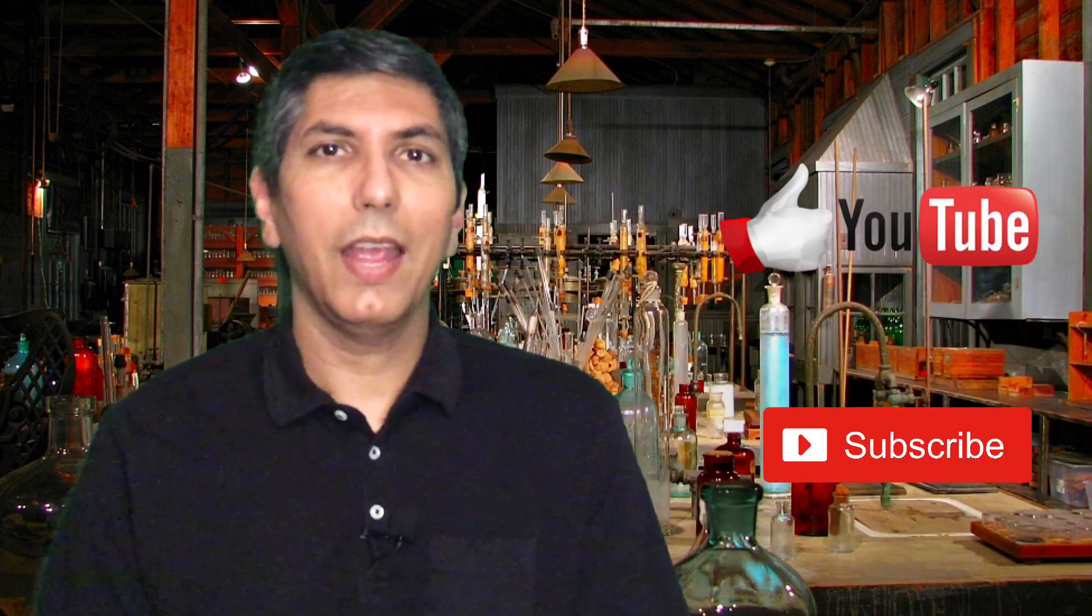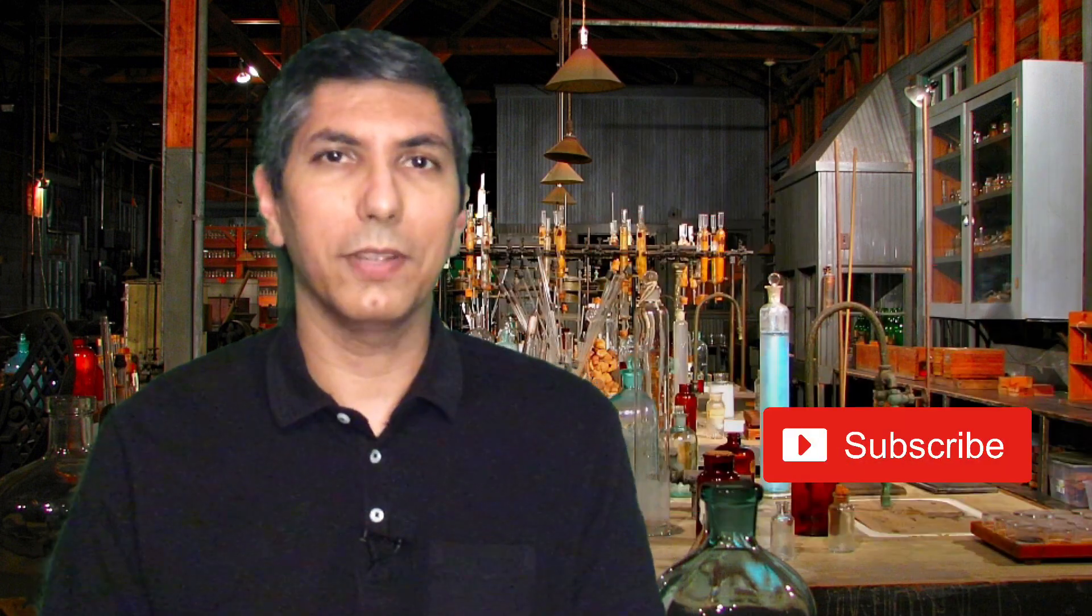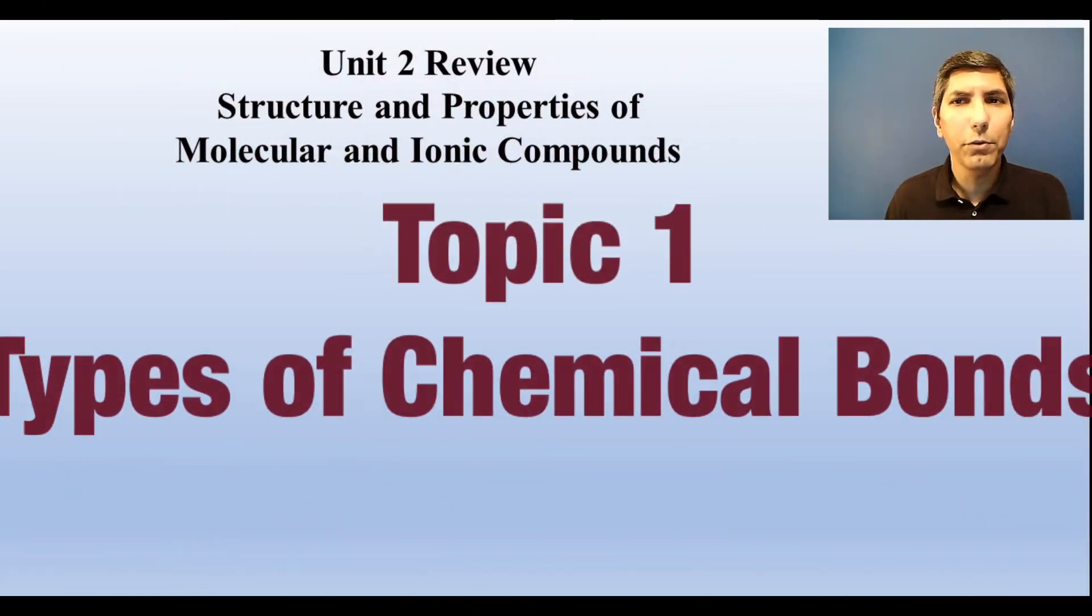Hi there, I'm Jeremy Krug and welcome to my 10-minute review of Unit 2 in AP Chemistry, which covers the structure and properties of molecular and ionic compounds. Please hit that thumbs up button, subscribe to my channel, leave a comment, and share this video with your friends. Let's get started in chemical compounds. The two main types of bonds are ionic and covalent.